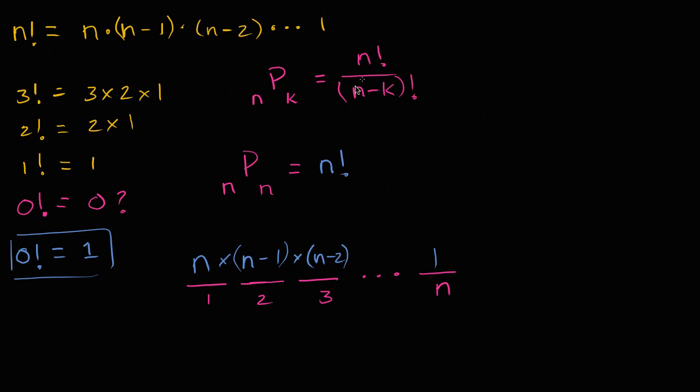But if we directly applied this formula, this would need to be n factorial over n minus n factorial. And then you might see why this is interesting because this is going to be n factorial over zero factorial.